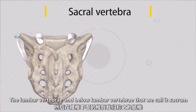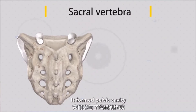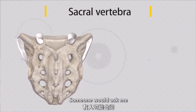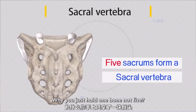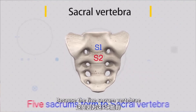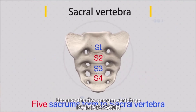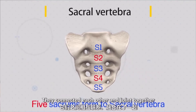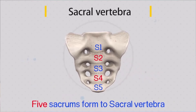Below the lumbar vertebra, that's what we call the sacrum. The sacrum forms the pelvic cavity. Someone would ask why I hold one bone, not five. Because the five sacral vertebrae are connected to each other — they joined together by synostosis, so they cannot move. They form a single bone — that's what we call the sacrum.